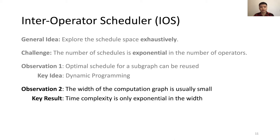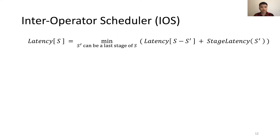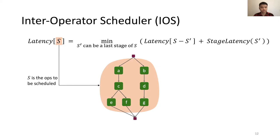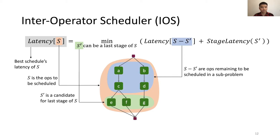Let's have a closer look at the dynamic programming adopted by iOS. iOS breaks the complicated problem of finding the optimal schedule for the whole computation graph into simpler subproblems — finding the optimal schedule for subgraphs. The formula describes how this reduction works: S represents the operators we want to schedule, and latency(S) is the latency of the optimal schedule for S. To find the optimal schedule, we enumerate all potential last stages S' and convert the original problem into a subproblem finding the optimal schedule for S minus S'. Since we can enumerate the last stage of the optimal schedule, we can find the optimal schedule through this dynamic programming algorithm.